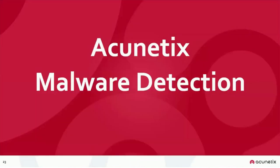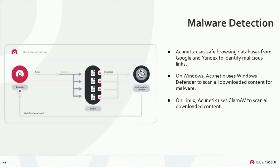For malware detection, Acunetix works in conjunction with antivirus engines to check for malware on your site. We use Google and Yandex public malware databases to identify malicious links. On Windows, we use Windows Defender to scan all downloaded content; on Linux, Acunetix uses ClamAV.